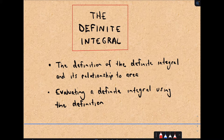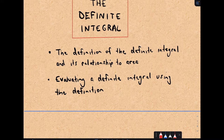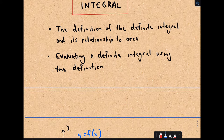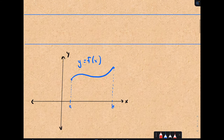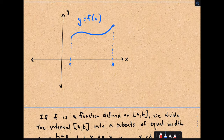We'll talk about the definition of the definite integral and its relationship to area — we'll come back to this when we talk about areas underneath curves. We'll also talk about evaluating a definite integral using the definition. This is analogous to finding the derivative using the definition, where you use that limit as h approaches zero. It's long and tedious, then you learn all the derivative shortcuts. We're going to learn the hard way to compute the area using the definition, and then you'll start seeing nice shortcuts. But for now, we're going to pay the piper and do it the hard way.